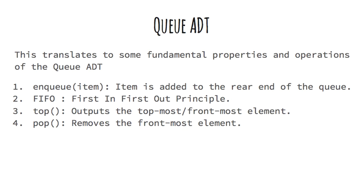Now let's look at what would happen if you were standing in a queue ADT. You would go in and enqueue yourself — that is, you would be added to the end of the line. The ticket vendor would interact on a first-come, first-served basis. He would talk to the top person, hand them the ticket, and then the person would be popped out of the queue — that is, leave the place.